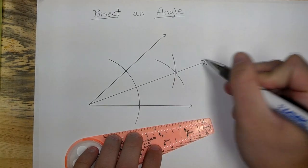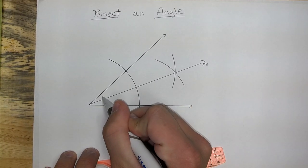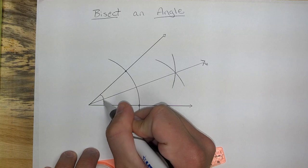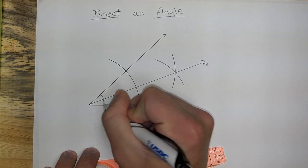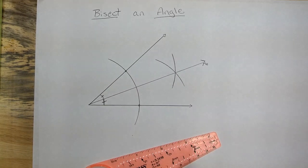Alright, there we go. Don't worry about the little squiggle. Now, this top angle and bottom angle are perfectly congruent. Same size. Which means we can use these cool little congruent marks. And that's how you bisect an angle.